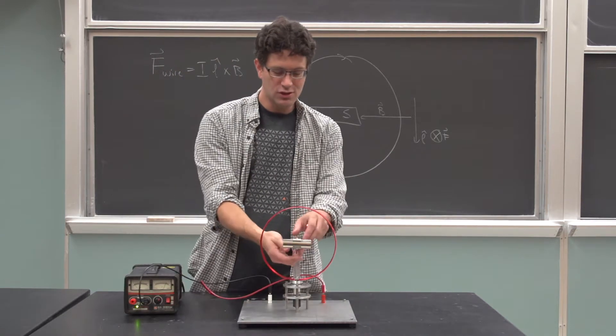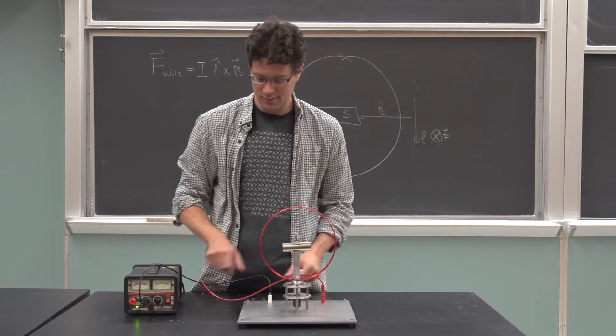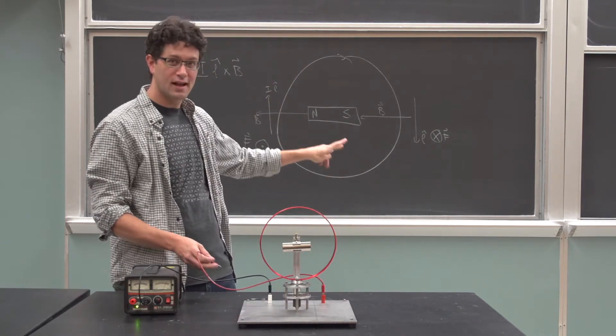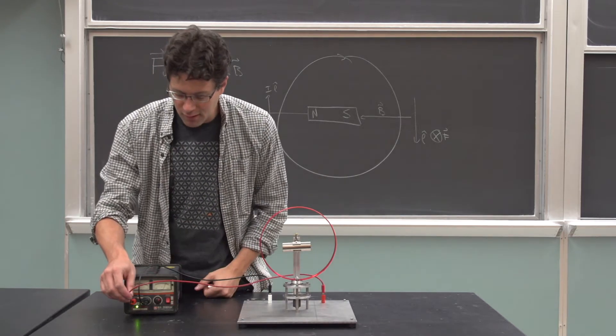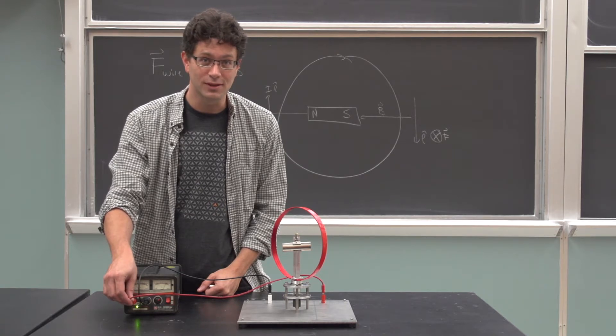And interestingly, I can change the direction of the magnet. Now I just reverse north and south, reverse the direction of the B field, which reverses the torque, opposite direction, as expected.